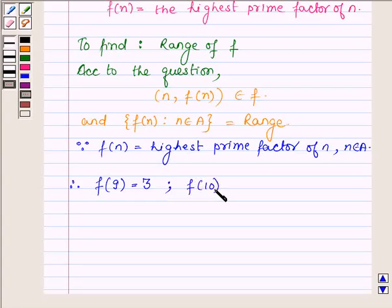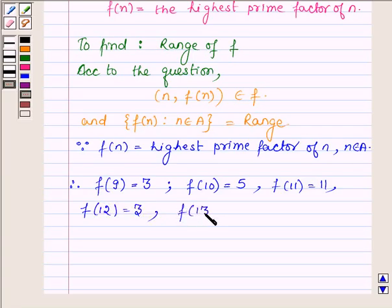Therefore, f(9) equals 3 since 3 is the highest prime factor of 9. f(10) equals 5 since 5 is the highest prime factor of 10. f(11) equals 11 since 11 is the highest prime factor of 11. f(12) equals 3, and f(13) equals 13.